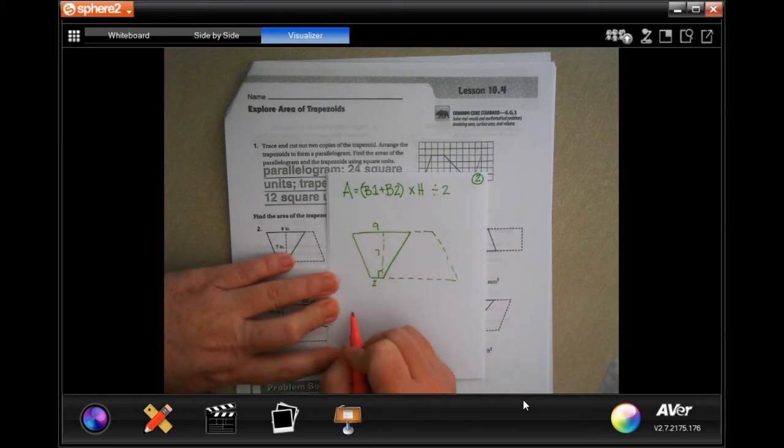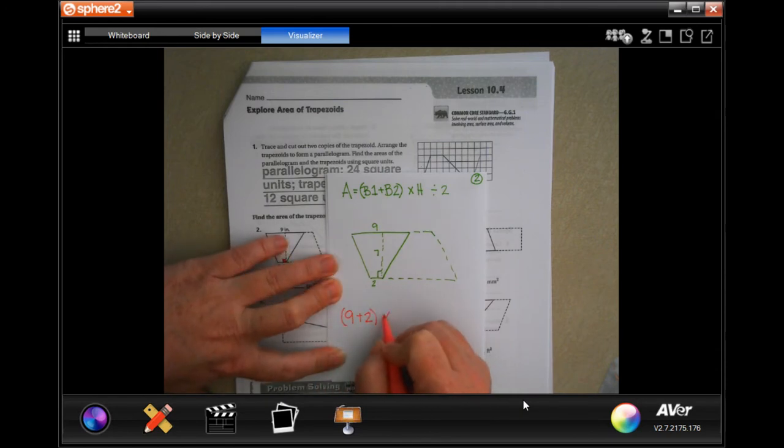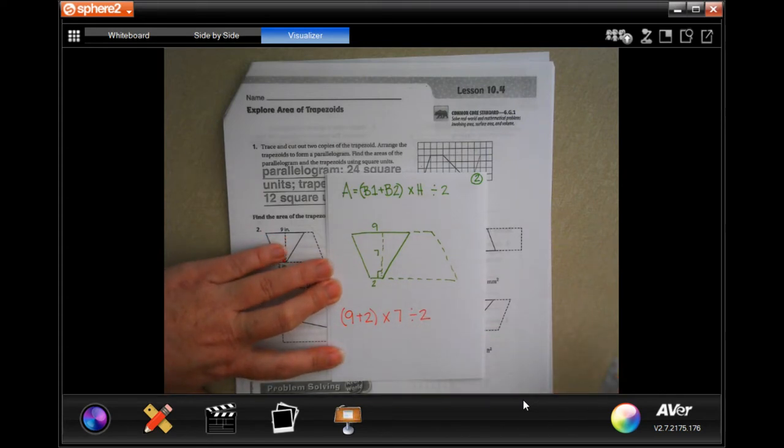So base 1 is 9, base 2 is 2. Times the height is 7, and then we're going to divide that by 2. Now we've plugged in numbers for all of that. So now, 9 plus 2 is 11, times 7, divided by 2.